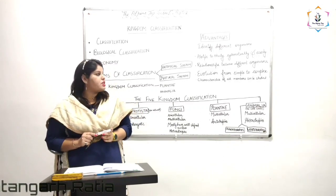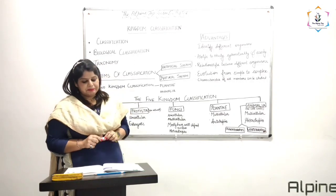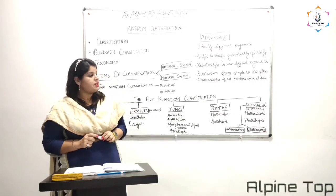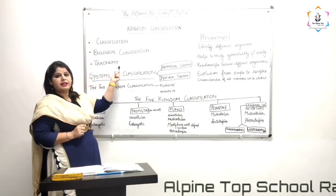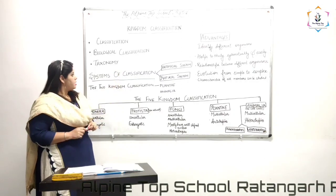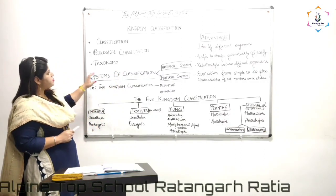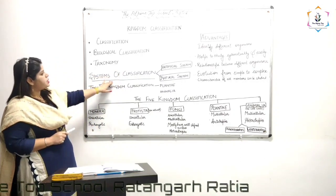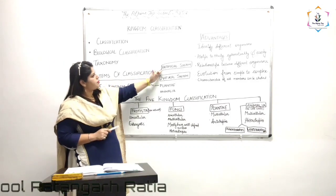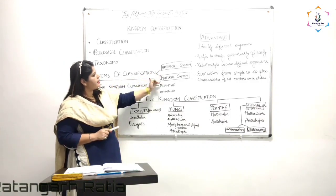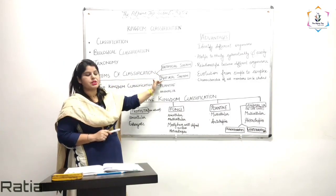The branch of science which deals with the classification of organisms is called taxonomy. There are two systems of classification: the first one is the artificial system of classification, and the second is the natural system of classification.